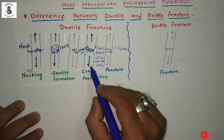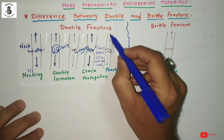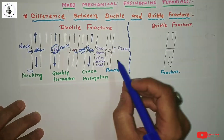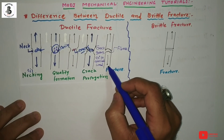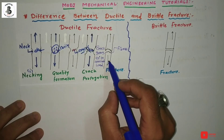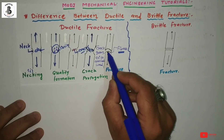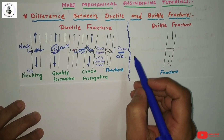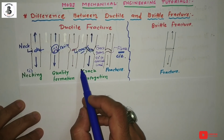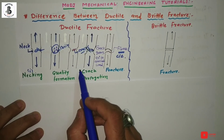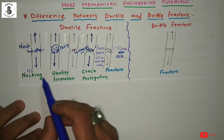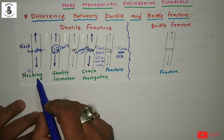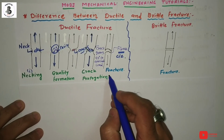After continued application of tensile load, the material eventually fails. The failure of ductile materials forms a fibrous structure at the cross-sectional area. In the case of ductile materials, failure always originates from the necking region — necking is generally found only in ductile materials.